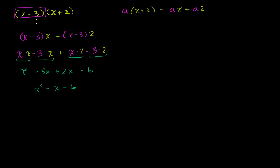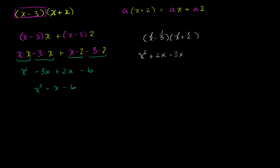Now before we move on, I want to show you that you can do this in your head as well — you don't have to go through all these steps. The fast way: if you had x minus 3 times x plus 2, you literally multiply every term by each other term. This x times that x gives x squared; this x times that 2 gives plus 2x; this minus 3 times that x gives minus 3x; then negative 3 times 2 is negative 6. Simplified: x squared minus x minus 6.